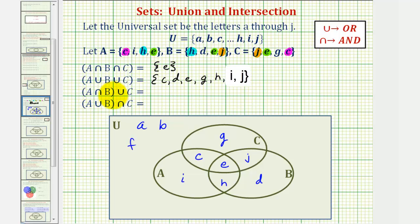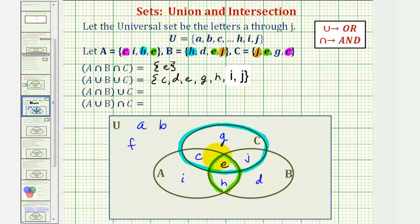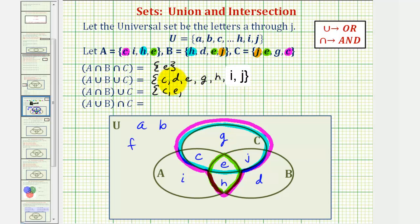Next we have A intersect B, and then union C. Let's first determine the elements in A and B — that's where sets A and B overlap. So A intersect B contains the elements E and H. Now we want that set union C. The elements in C are in this region, so we want the elements in this intersection or in C. That ends up being the elements C, E, G, H, and J.